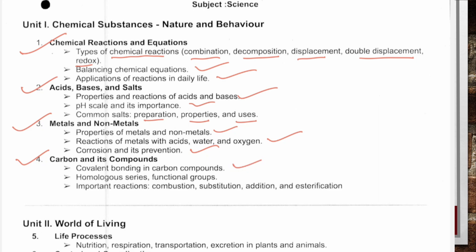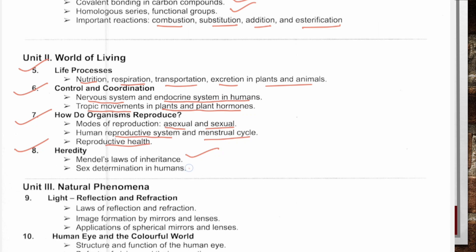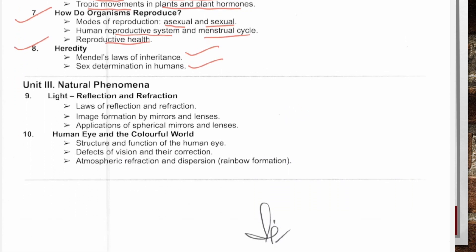Chapter Carbon and Its Compounds: covalent bond in carbon compounds, homologous series and functional groups, important reactions — combustion, substitution, addition and esterification. From the unit World of Living: Life Processes — nutrition, respiration, transportation, excretion in plants and animals. Control and Coordination — nervous system and endocrine system in humans, tropic movements in plants and plant hormones. How Do Organisms Reproduce — asexual and sexual modes, human reproductive system and menstrual cycle, reproductive health. Heredity — laws of inheritance and sex determination in humans.